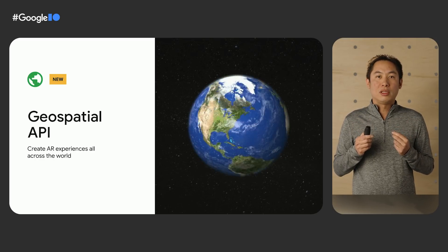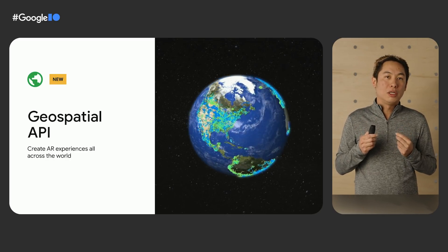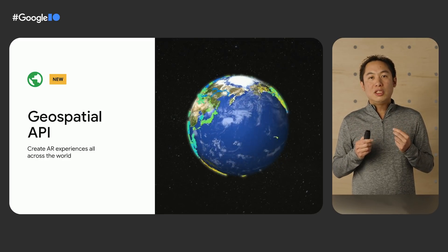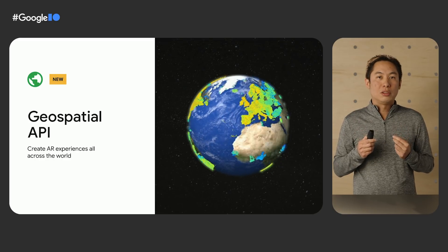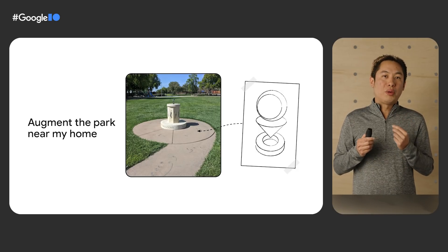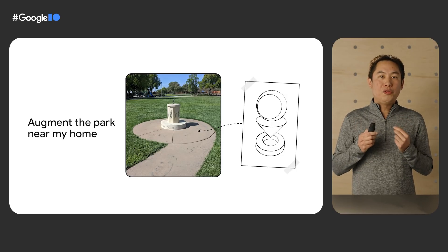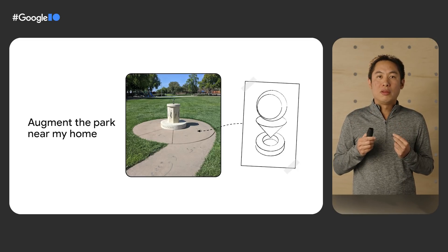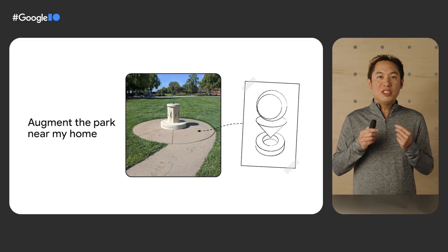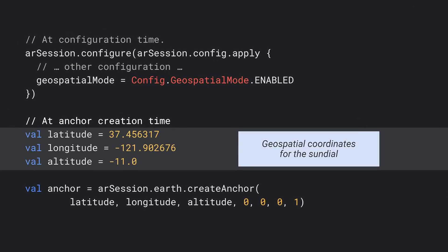This is powered by Google's global localization technique, combining Visual Positioning Service, or VPS, Street View, and Machine Learning, so it works all around the world. This uses the same technology powering walking navigation of Live View in Google Maps. For example, I want to create an experience with a virtual object in a park near my home, right next to a sun dial. I'll need to figure out the exact latitude, longitude, and altitude for the anchor. This can be done from the comfort of your own desk using Google Maps. The specific steps are described in our developer page, and here are the geospatial coordinates of the sun dial. These coordinates can then be persisted into my app's database.